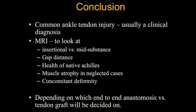To conclude: Achilles tendon injury is common and usually a clinical diagnosis. MRI is not needed to diagnose the case, but we need it to differentiate insertional versus mid-substance tear, provide a rough idea about the gap size on which treatment depends, and assess the health of the native Achilles. The orthopedic surgeon needs this to plan surgery — if the tendon is healthy, an end-to-end anastomosis can be planned; if unhealthy, a tendon graft is required, often taken from the flexor hallucis longus. We also need to report muscle atrophy in neglected cases, especially soleus atrophy, and look for other abnormalities like retrocalcaneal bursitis and Haglund's deformity.